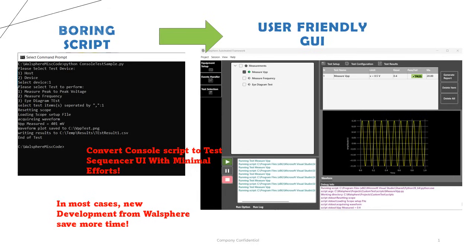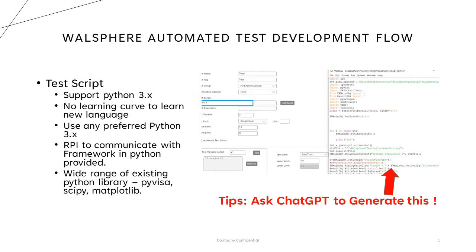Drag and drop GUI elements and manage test configurations with the tree list GUI control, making test setup straightforward and user-friendly. Support for Python 3.x with no learning curve, allowing you to use existing Python libraries. Combine with generative AI such as ChatGPT to generate code and save you time further.